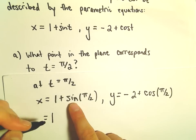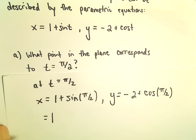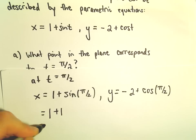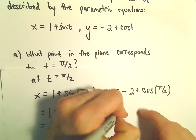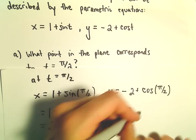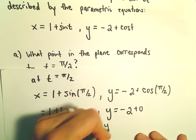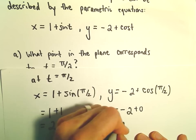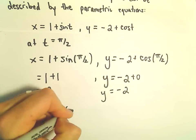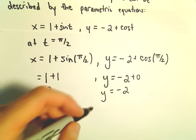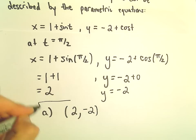Let's see. Sine of pi over 2 puts us at the top of the unit circle. Sine there equals positive 1, so the x-coordinate will equal positive 2. Cosine of pi over 2 equals 0, so the y-coordinate simply equals negative 2. The point in the plane at pi over 2 will be sitting at the point 2 comma negative 2.